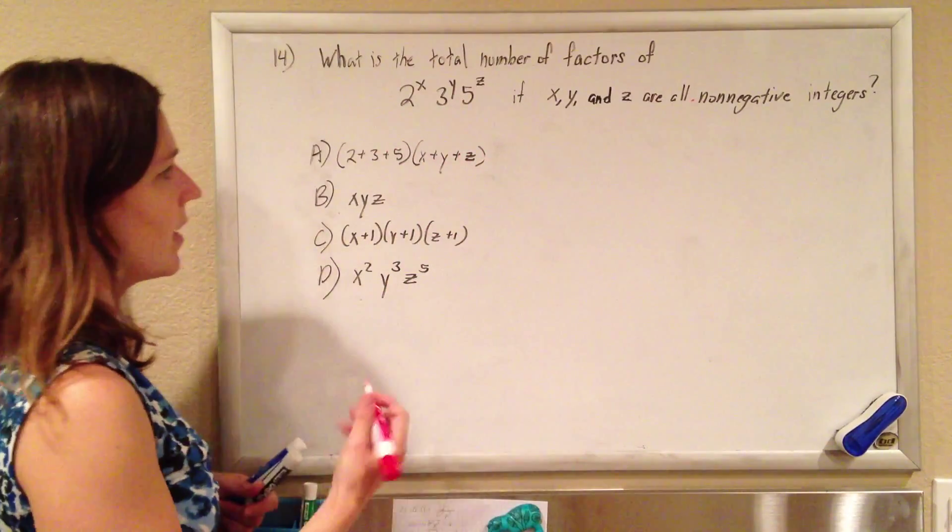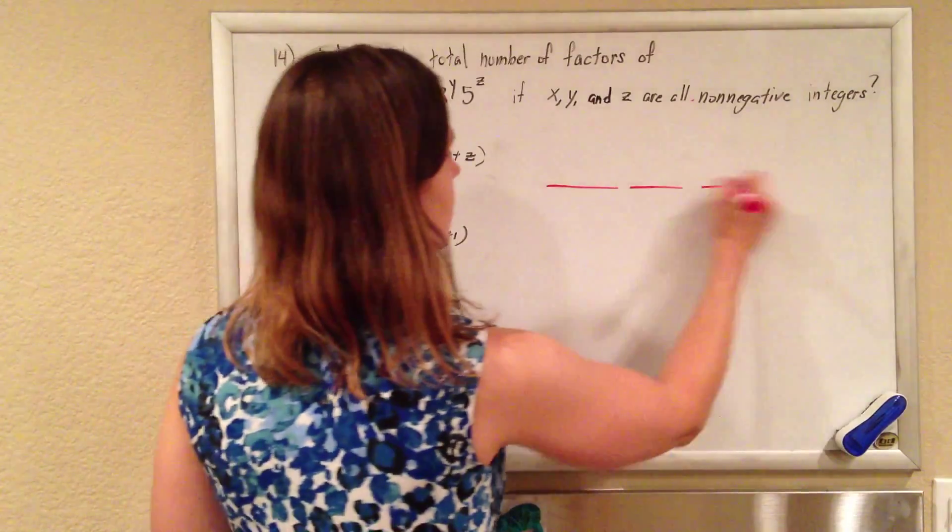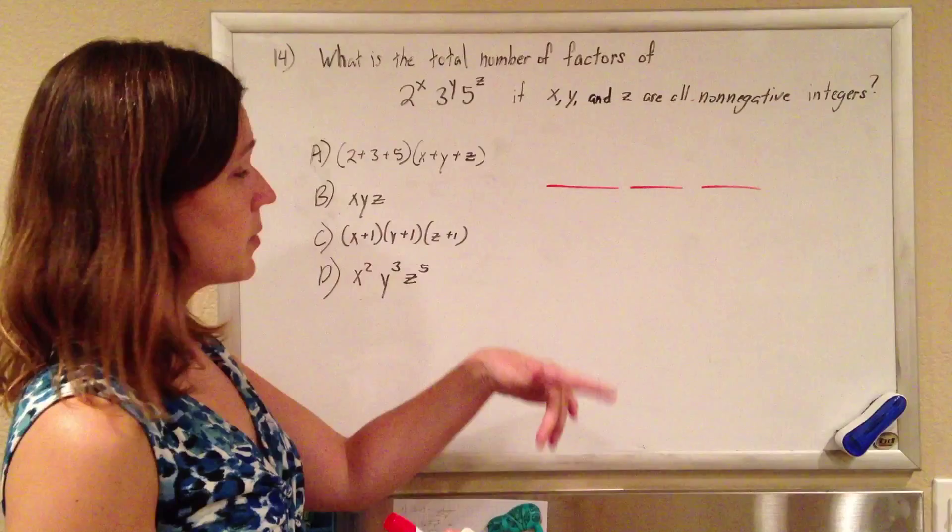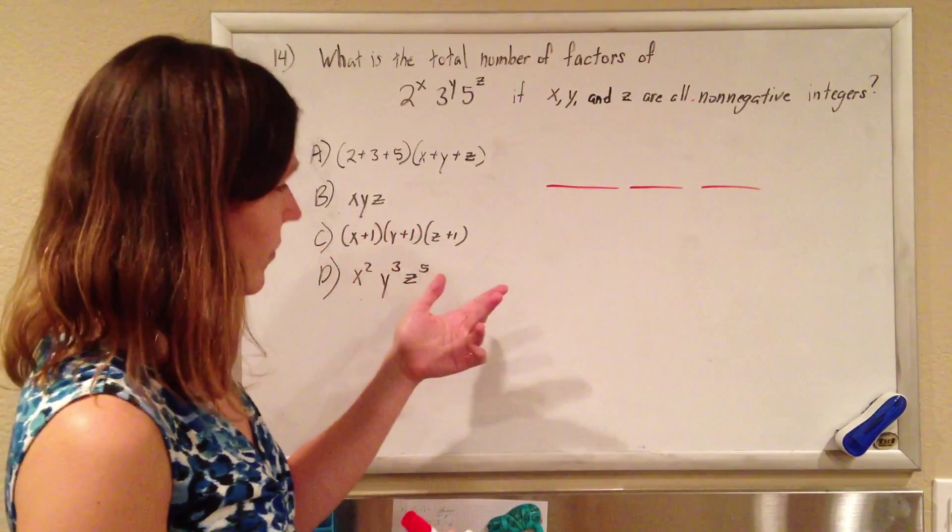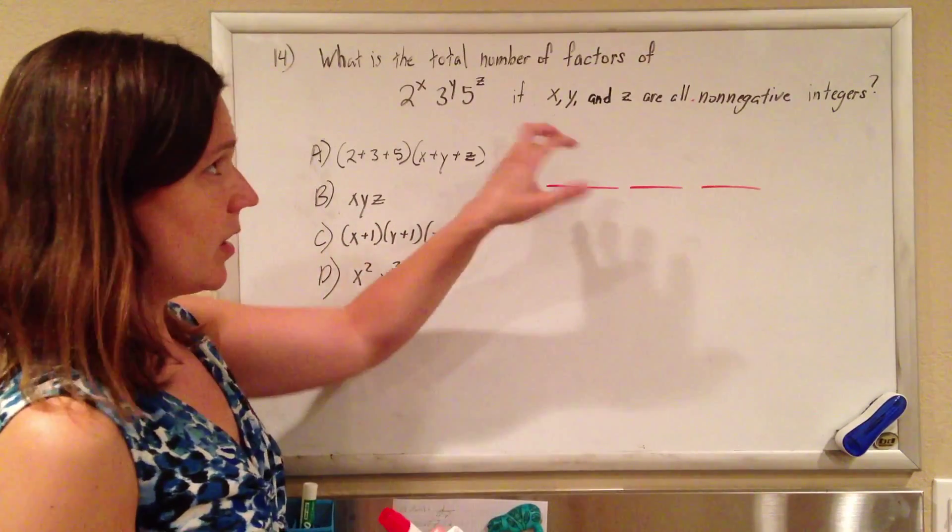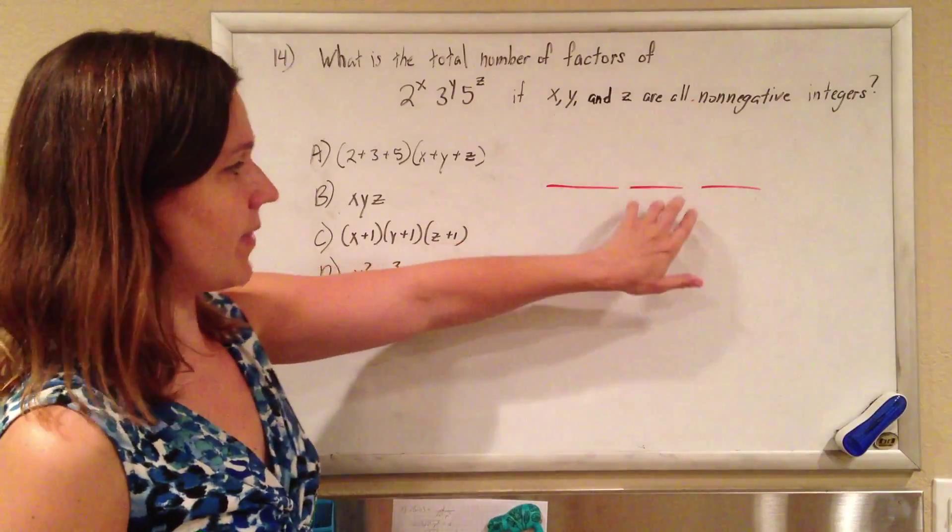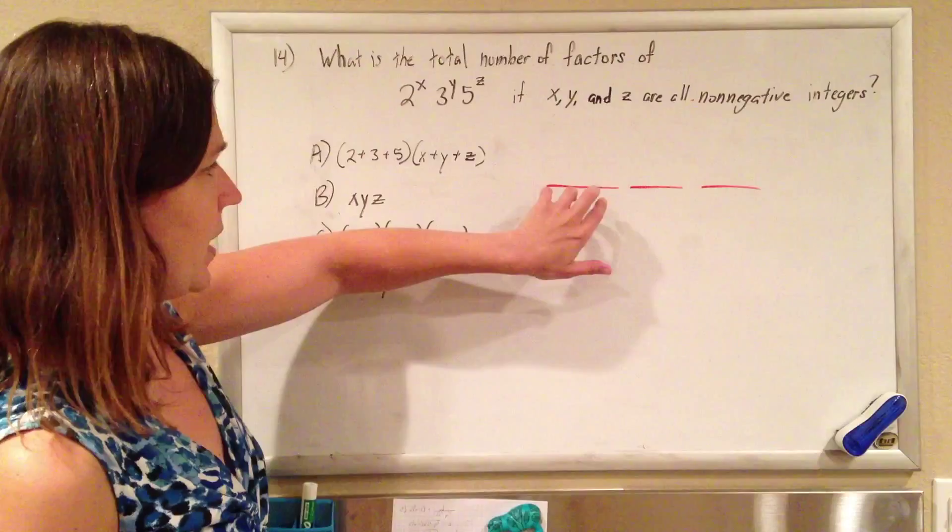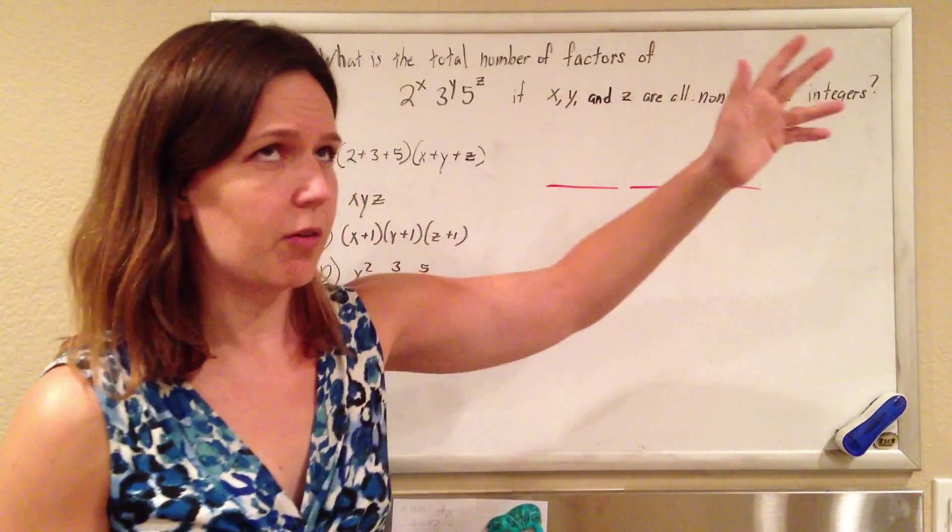So you're kind of looking at what I consider a fundamental theorem of counting principle. It's more in the geometry subtest, where if you have 3 pairs of pants and 5 shirts and 2 pairs of shoes, then you can make 3 times 5 times 2, 30 outfits.